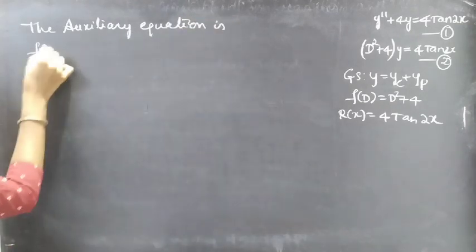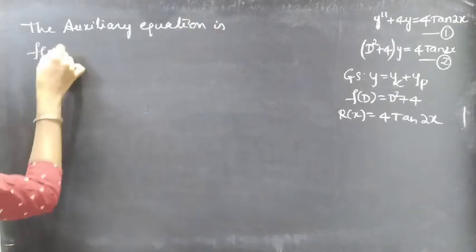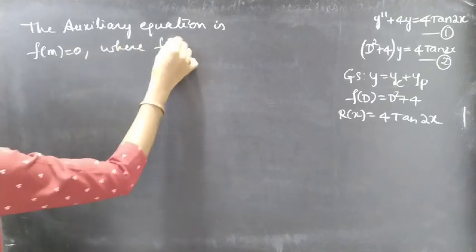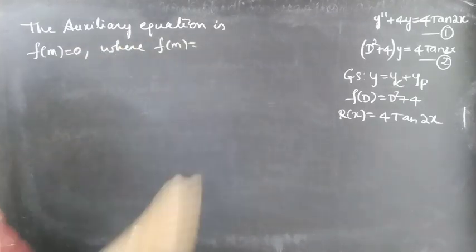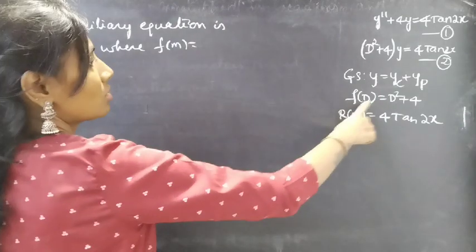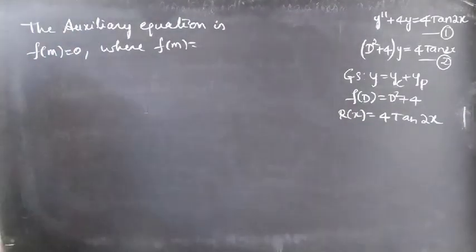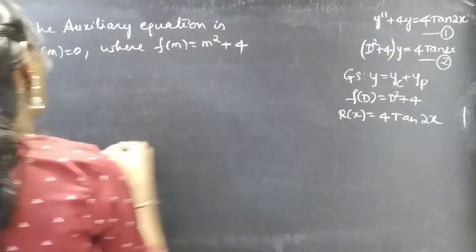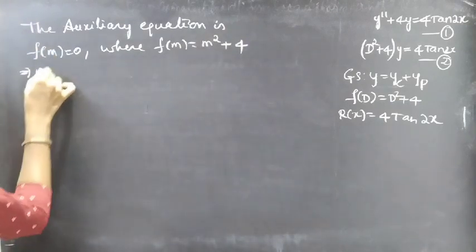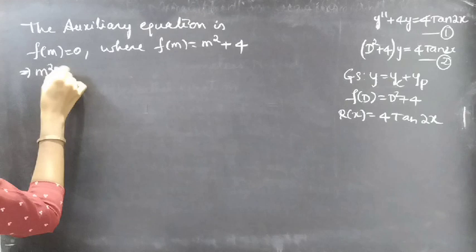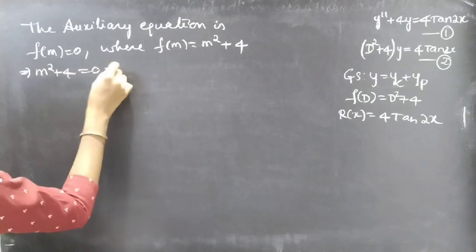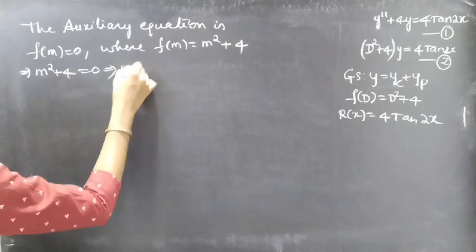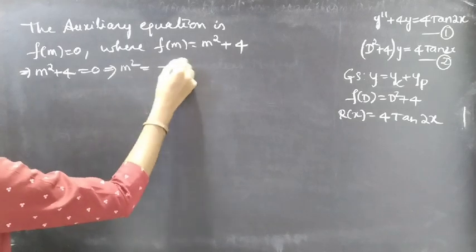The auxiliary equation is f(m) = 0, where f(m) is obtained by replacing the differential operator D with m. Since f(D) = D² + 4, we get f(m) = m² + 4. So the auxiliary equation becomes m² + 4 = 0. We now need to find the roots of this equation.